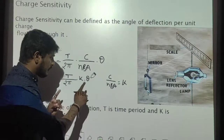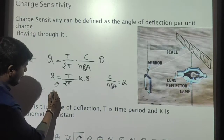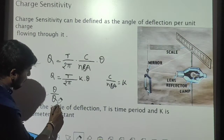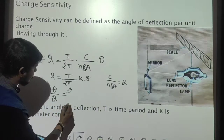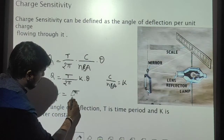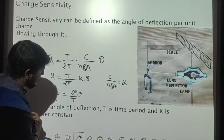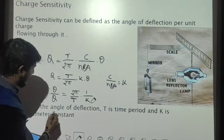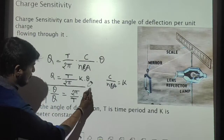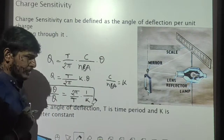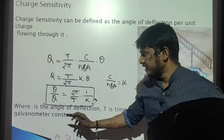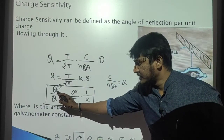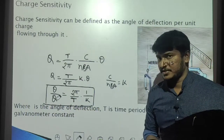Now I am going to interchange these terms: theta divided by Q is equal to 2π divided by T into 1 over K. This is the equation for charge sensitivity. Charge sensitivity is defined as the angle of deflection produced for unit charge.